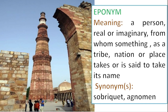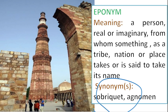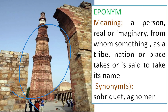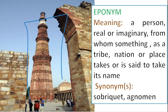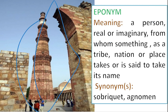Next is eponym — the picture used is of Qutub Minar. An eponym is a person, real or imaginary, from whom something like a tribe, nation, or place is said to take its name. For example, Down's syndrome is an eponym for the English physician John Down. The word boycott was named after Charles C. Boycott — so boycott becomes an eponym. Over here, Qutub Minar was named after Qutubuddin Aibak, so Qutubuddin is the eponym on the basis of which we named that structure.